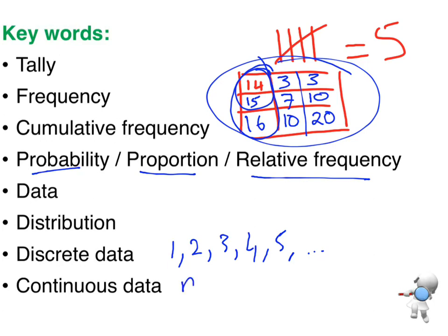Whereas continuous data, that is our measurements. So measuring the height, measuring the weight. I can get values of, you know, 22.36 kg. So I can get decimal values. And I'm going to use some kind of measuring scale or rule or something to get that information.